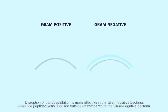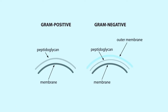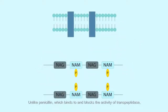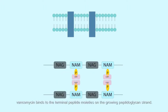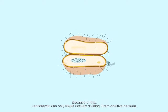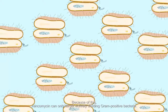Disruption of transpeptidation is more effective in gram-positive bacteria where the peptidoglycan is on the outside, as compared to gram-negative bacteria. Unlike penicillin, which binds to and blocks the activity of transpeptidase, vancomycin binds to the terminal peptide moieties on the growing peptidoglycan strand. Because of this, vancomycin can only target actively dividing gram-positive bacteria.